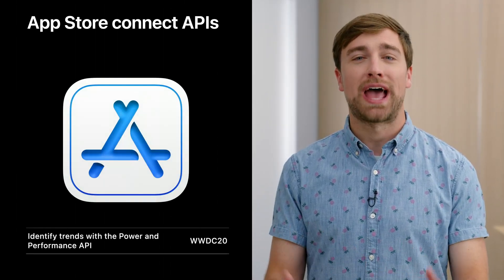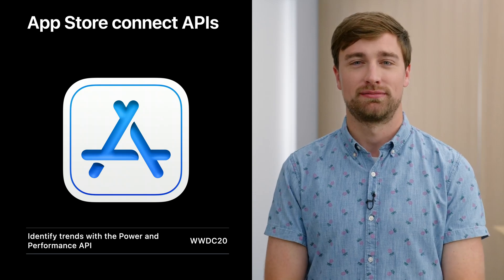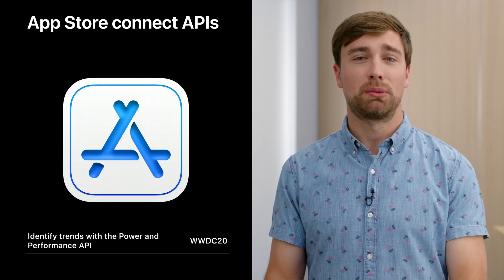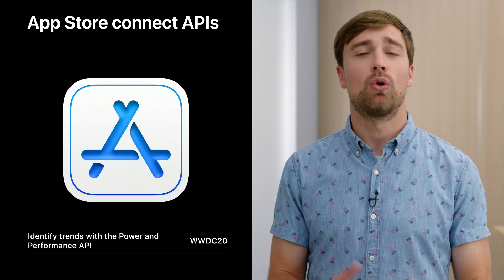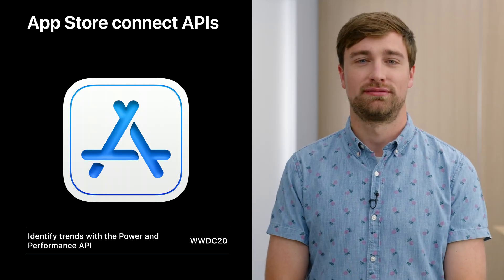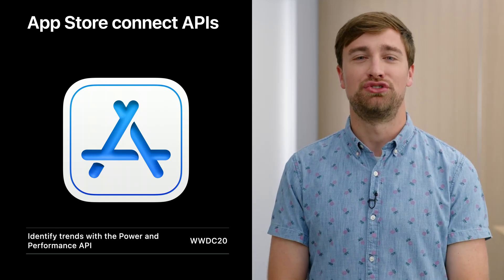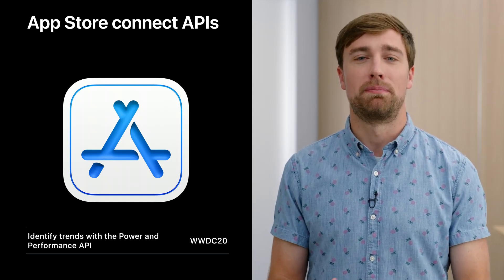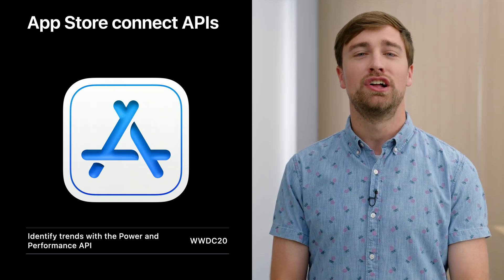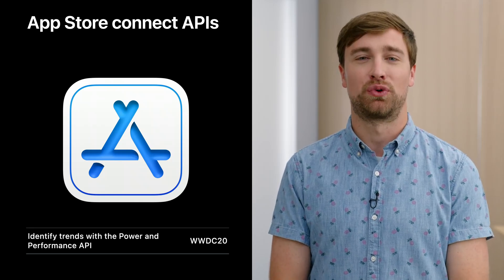It is important to tackle the performance problems most affecting your customers, and the organizer is a great tool to identify them. Check this data after each app release to validate that previous hangs have been resolved and to address new hangs that may appear. You can also retrieve the same hang report data through the App Store Connect REST APIs, which can help you integrate performance data with your own systems or run additional analysis. I highly recommend checking out the "Identify Trends with the Power and Performance API" video to learn more.